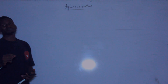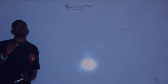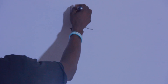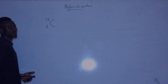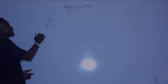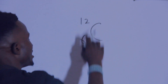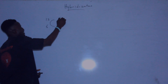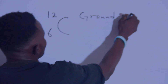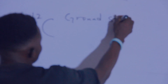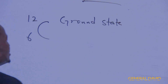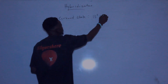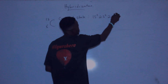Since carbon is the major element of an organic compound, let us consider the electronic configuration of carbon in two states. The atomic number of carbon is 6 and the atomic mass is 12. The electronic configuration of carbon in its ground state is 1s², 2s², 2p².